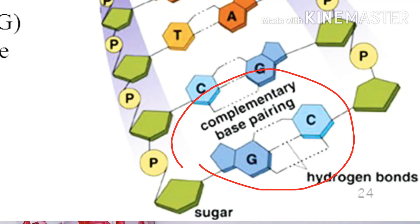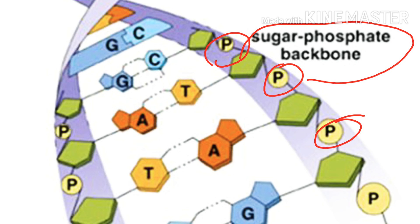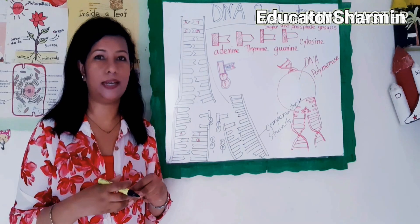DNA polymerase links the sugar and innermost phosphate groups of neighboring nucleotides together. The two extra phosphates are broken off and released into the nucleus. That's all — thank you for watching. Don't forget to subscribe and share. If you need more classes, go to my website. Thank you very much.